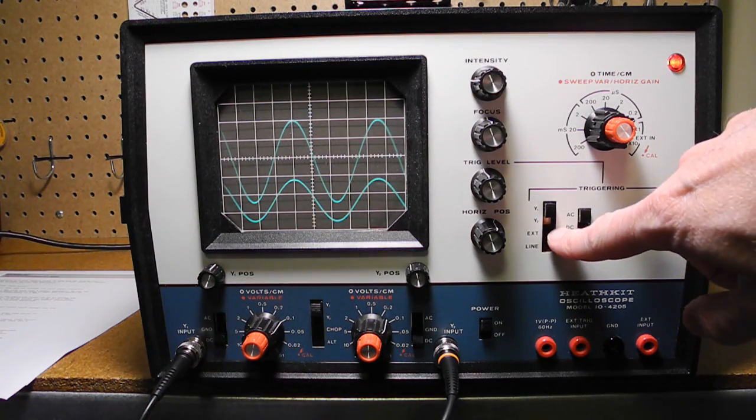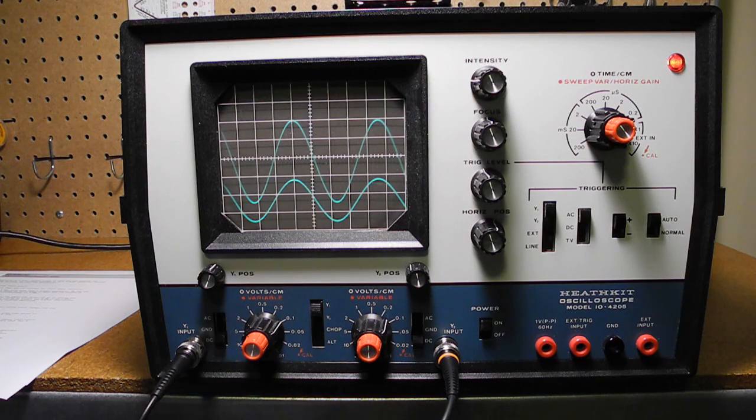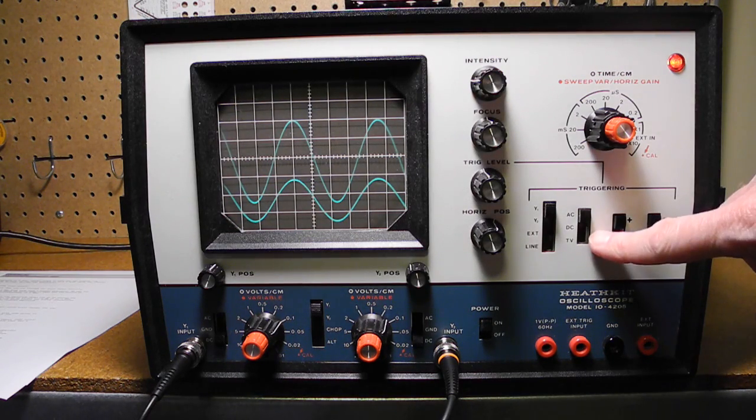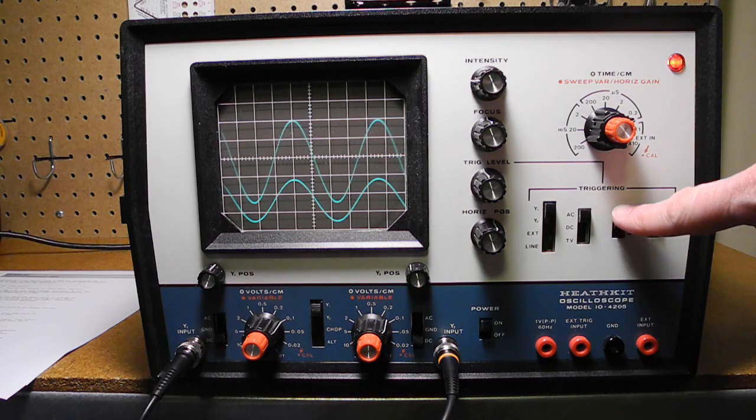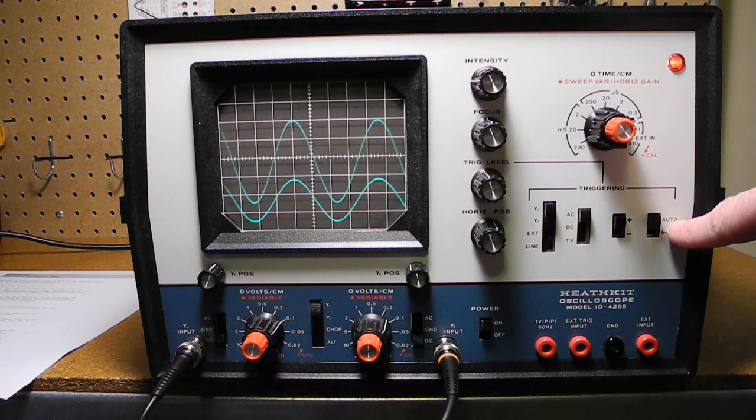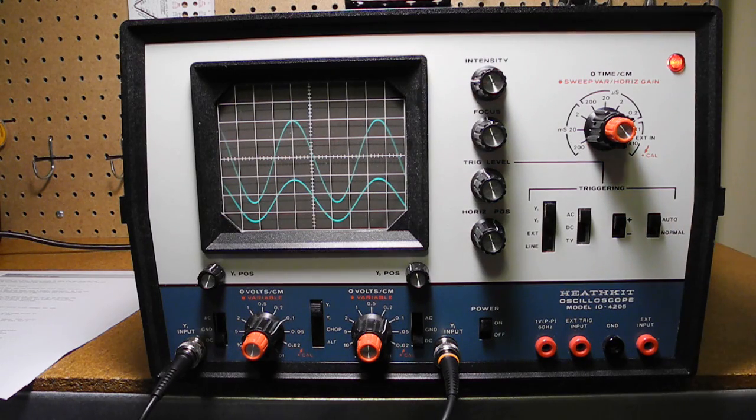On triggering here, we can select whether the triggering is channel 1, 2, an external input or line input. We can select whether the triggering is AC, DC, or television type signal, plus or minus polarity, and the auto or normal triggering mode.